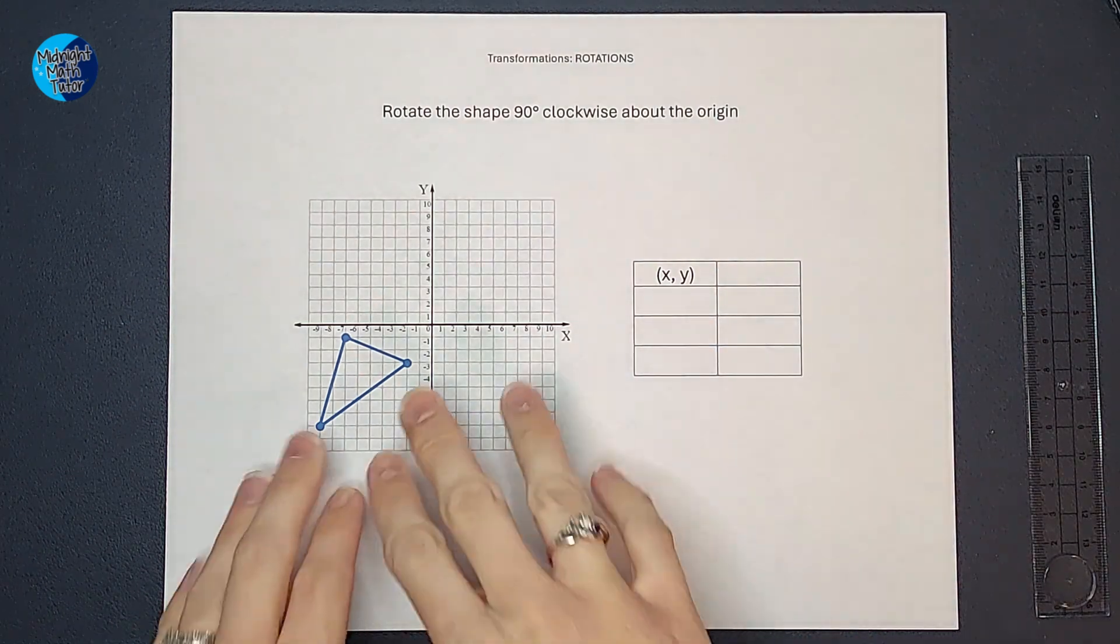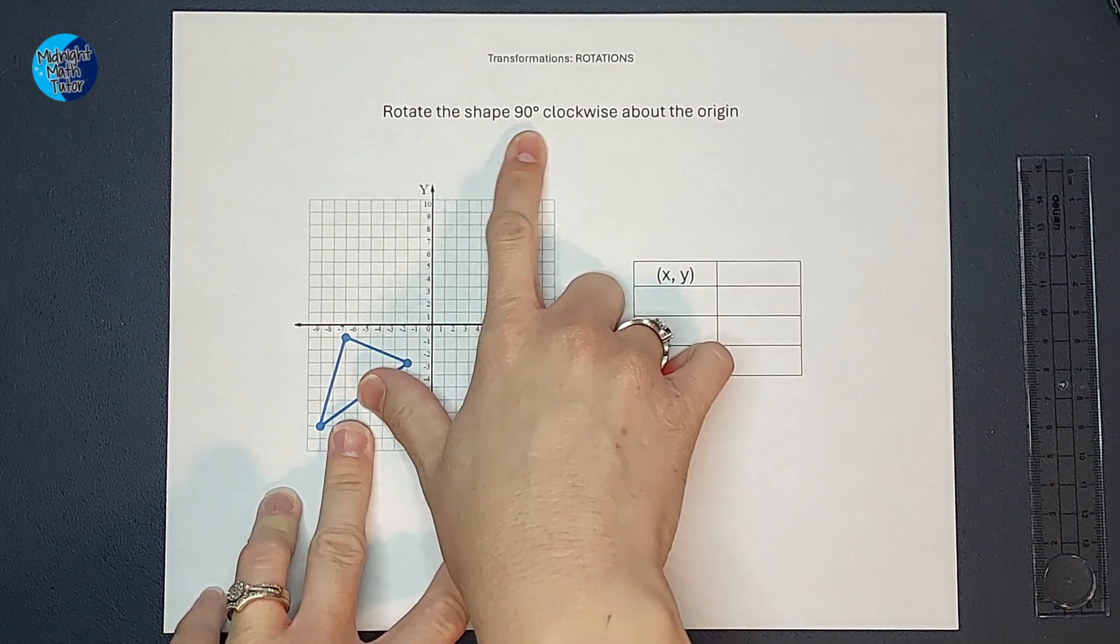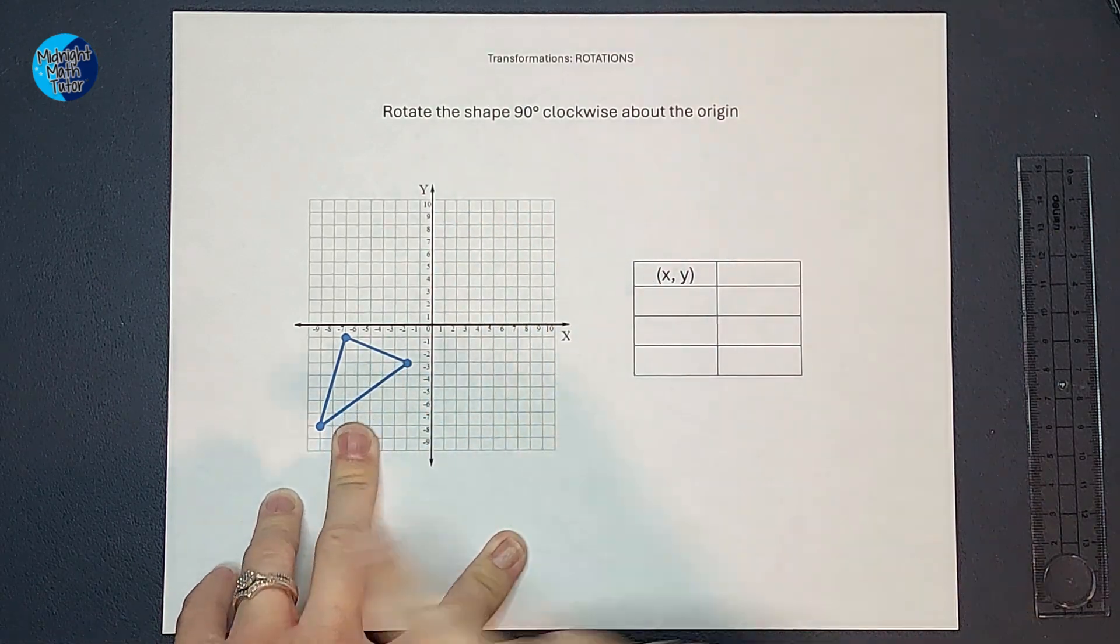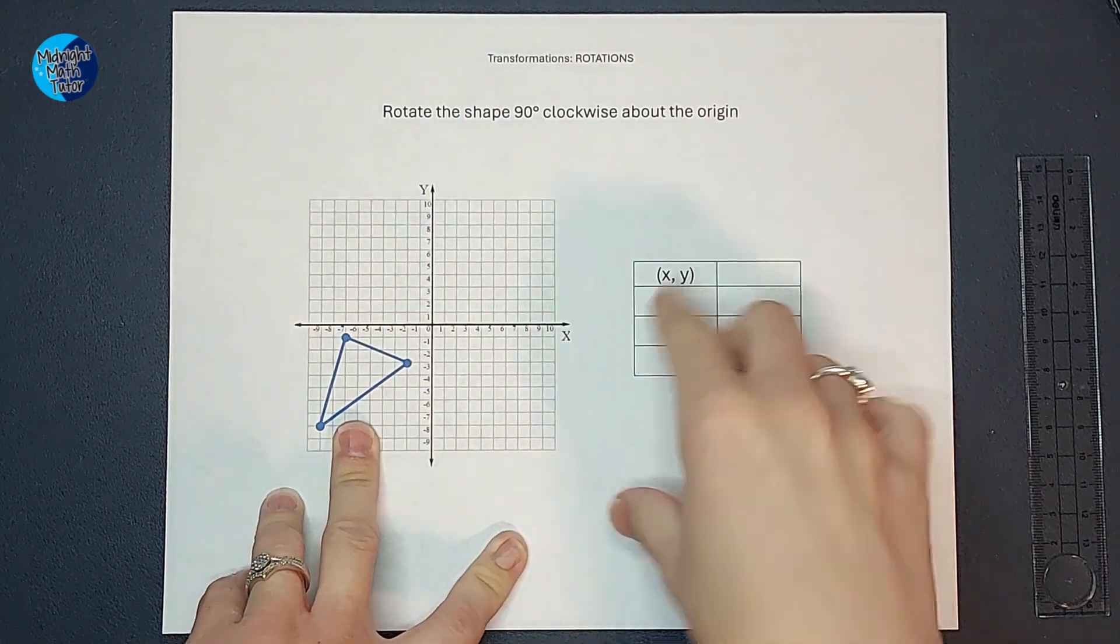So to do this rotation, we want to rotate this shape 90 degrees clockwise about the origin.